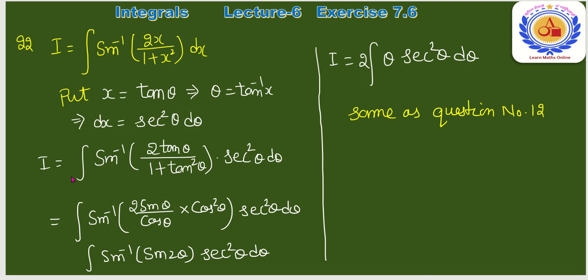Question number 22: ∫sin⁻¹(2x/(1+x²))dx। 1+x² form है, तो x = tan θ substitute करते हैं, dx = sec²θ dθ। 2x/(1+x²) = 2tan θ·sec⁻²θ = sin 2θ। So sin⁻¹(sin 2θ) = 2θ।